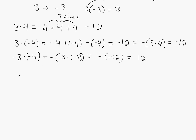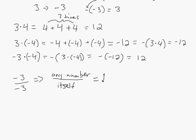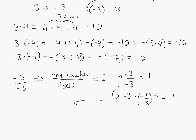Let's consider something like this: negative 3 divided by negative 3. This is similar to the rule that any number divided by itself is equal to 1. So negative 3 over negative 3 equals 1 — the negatives cancel out. But you could also rewrite this as negative 3 times negative 1 over 3. And here we have a negative times a negative, which equals 1. So from here, this shows that negative times negative equals positive.